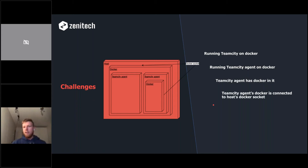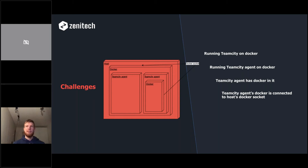To connect it all, the TeamCity agent Docker container is connected to the host Docker socket, meaning the agent can not only create resources like Mongo or Redis during builds, but could also kill itself with a simple Docker rm command. That's a big red flag — you have to be careful not to write things like that.